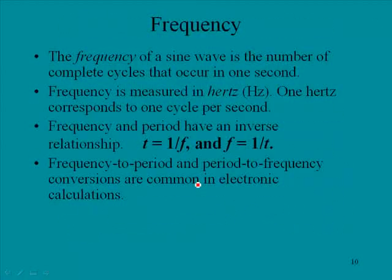Frequency. The frequency of a sine wave is the number of complete cycles that occur in one second. Frequency is measured in a quantity called hertz. One hertz corresponds to one cycle per second.